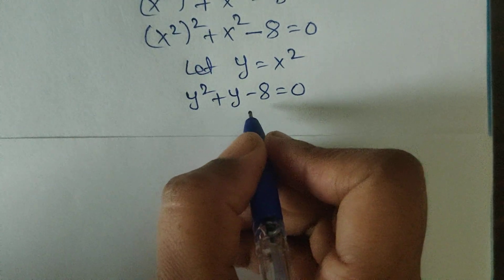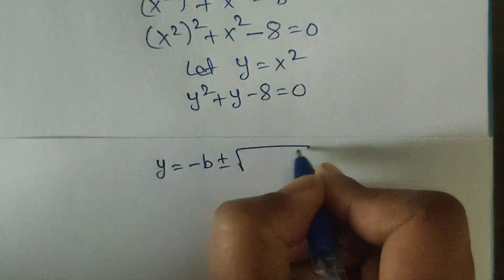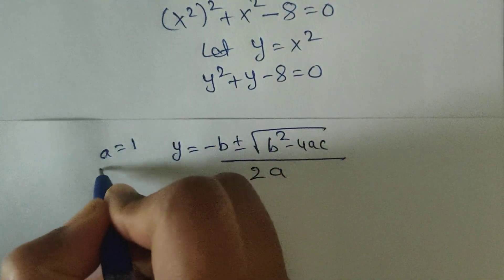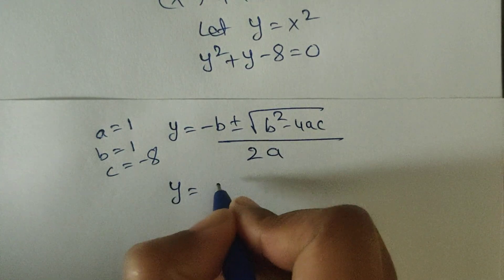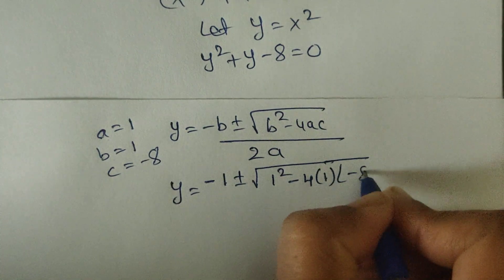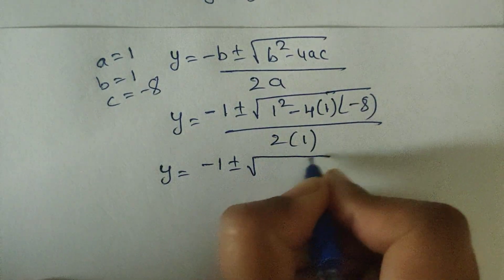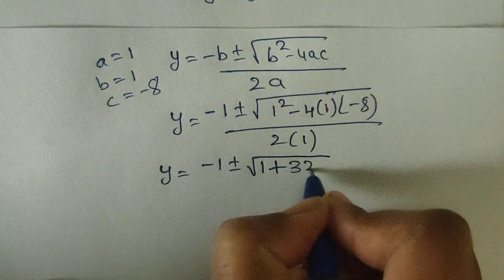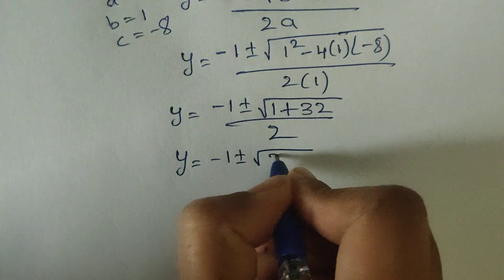This is a quadratic equation, so we apply the quadratic formula: y equals minus b plus or minus square root of b squared minus 4ac, divided by 2a. The values are a equals 1, b equals 1, c equals minus 8. Substituting: y equals minus 1 plus or minus square root of 1 squared minus 4 times 1 times minus 8, divided by 2 times 1. Here 4 times 8 equals 32, and minus minus becomes positive plus 32. So y equals minus 1 plus or minus square root of 1 plus 32, which equals square root of 33, divided by 2.